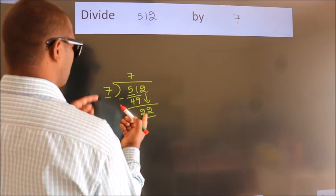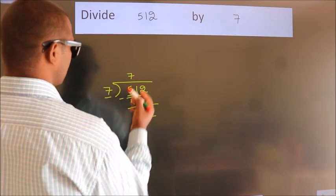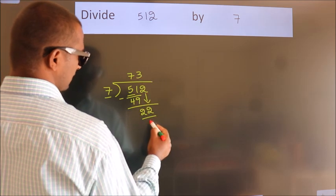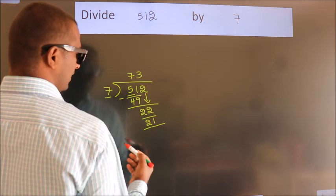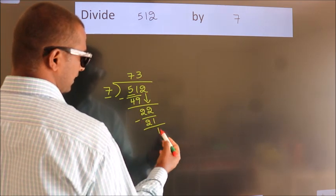A number close to 22 in the 7 table is 7 threes, 21. Now we subtract. We get 1.